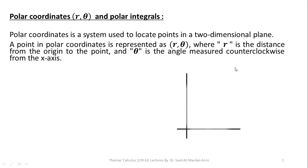First of all, what is a polar coordinate system? A polar coordinate is a system used to locate points in a two-dimensional plane. A point in polar coordinate is represented by r and theta, where r is the distance of the point from the origin and theta is the angle measured counterclockwise from the positive x-axis.